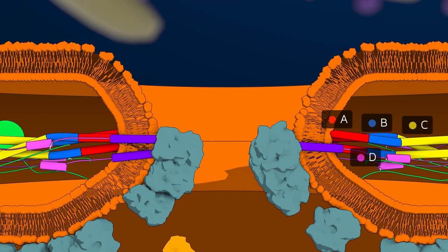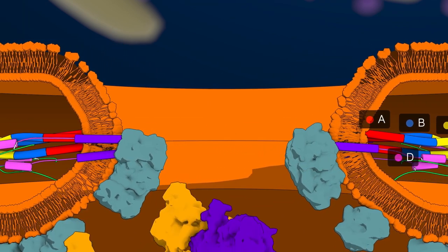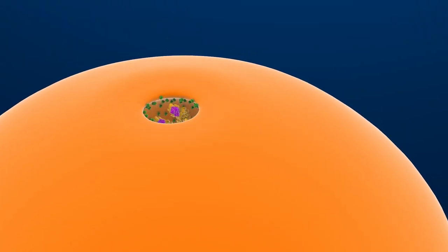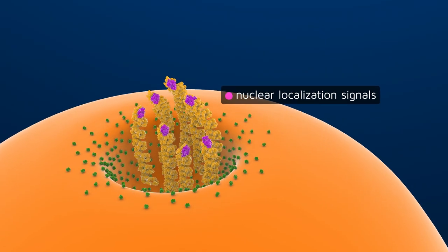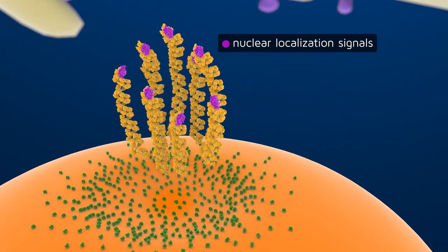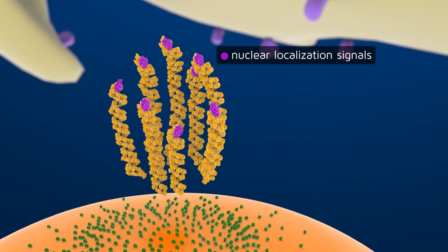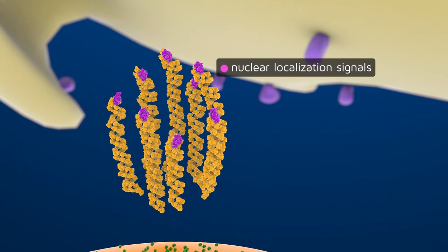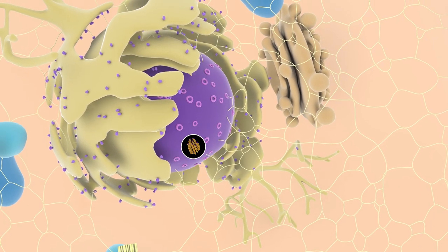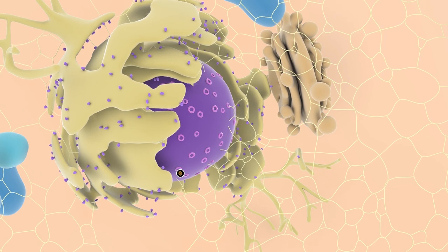A fusion pore is created and the viral genome is released into the cell cytoplasm near the nucleus. The released viral ribonucleoprotein complexes carry nuclear localization signals. They enter the nucleus where the viral multiplication process begins.